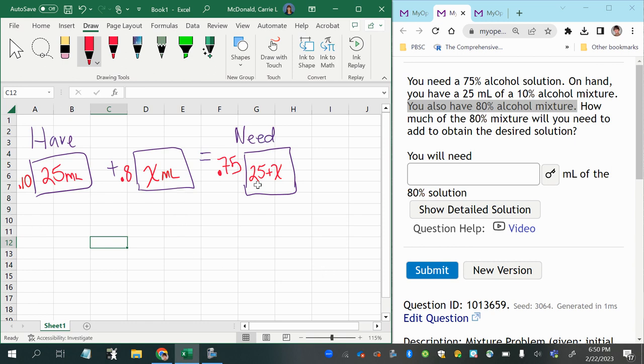Then you can multiply through by 100 to get rid of the decimal places, which really you can save a step and just use 10 times 25 plus 80 times x equals 75 times 25 plus x.